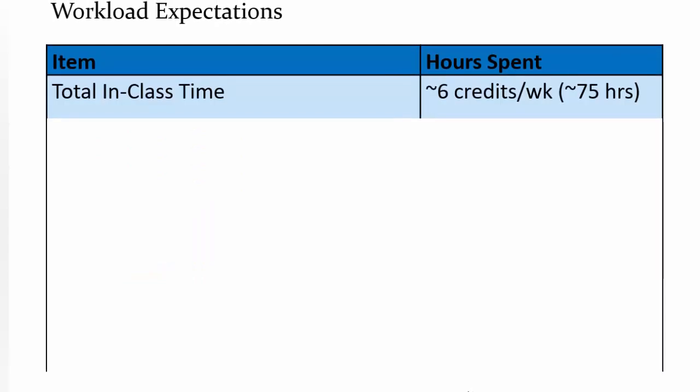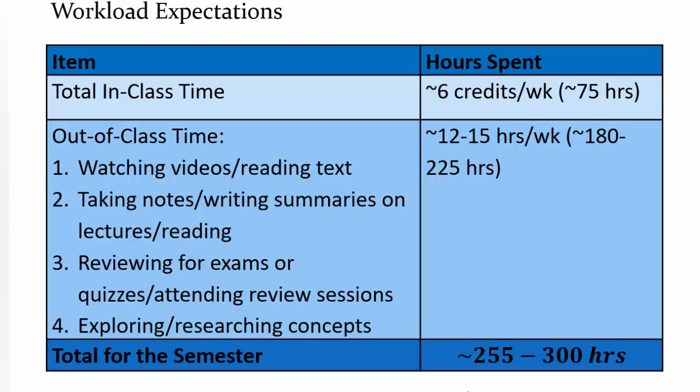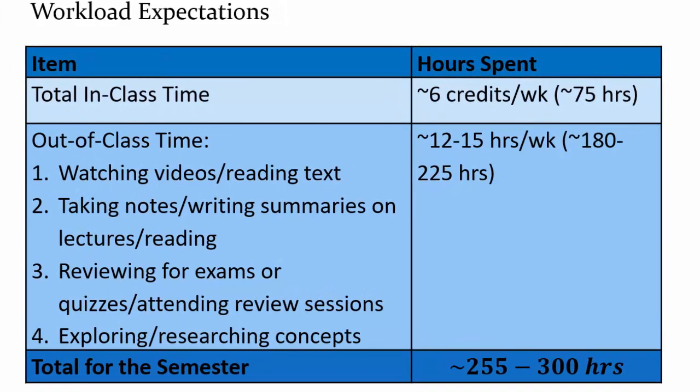Workload expectations. Again, we talked about how six credit class, that would mean 75 hours in the semester. If you're doing three credits, that will be half of that. Out of class time, again, 12 to 15 hours for a six credit class, and half of that if you are doing three credit class. So if you're doing a three credit class, expect about 150 hours. And if you're doing the 098-108, you should expect 300 hours in the semester. That's almost like a part-time job, right? So managing workload is going to be a huge challenge. But remember, you are up to it. Just make sure that you take time to schedule all the study time ahead of time.